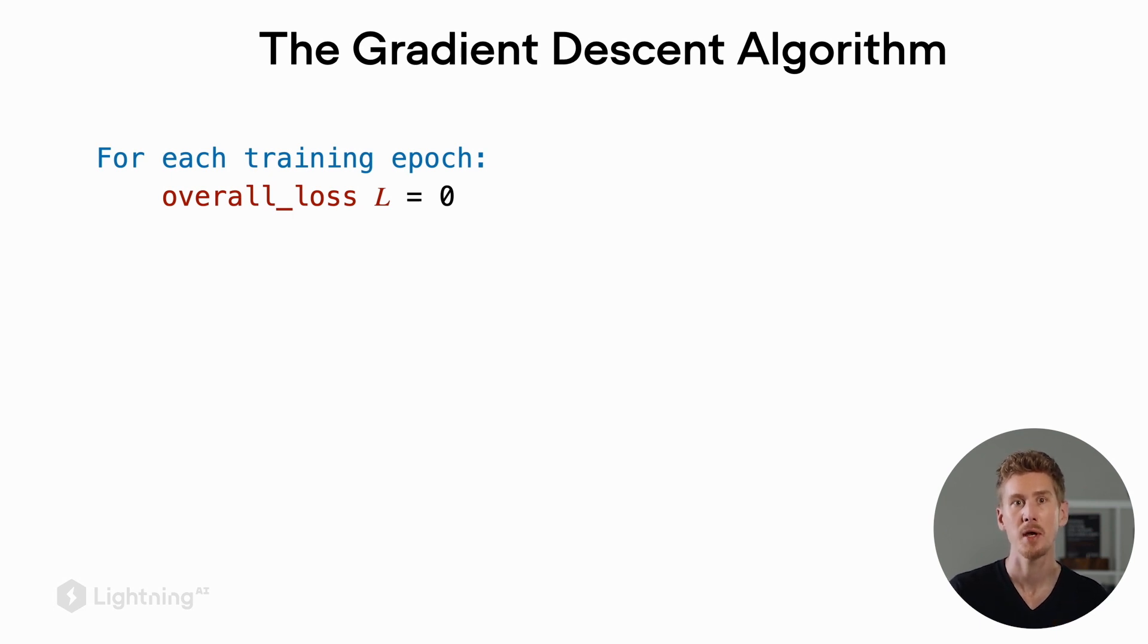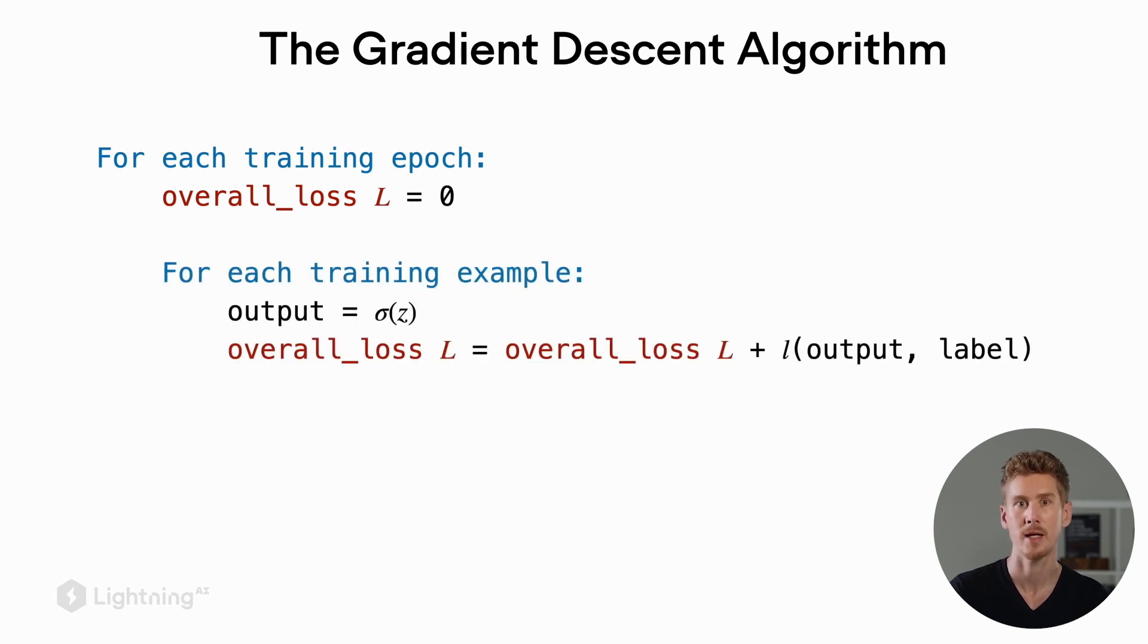So in each training epoch, we start with a placeholder value, L equals zero. So that's our overall loss, which we set to zero here as a placeholder. And then we iterate through the training examples.